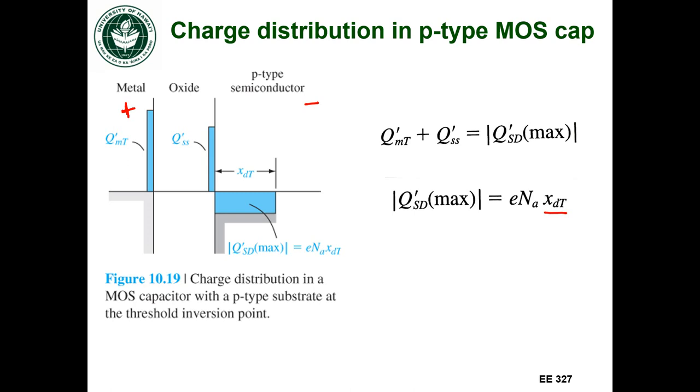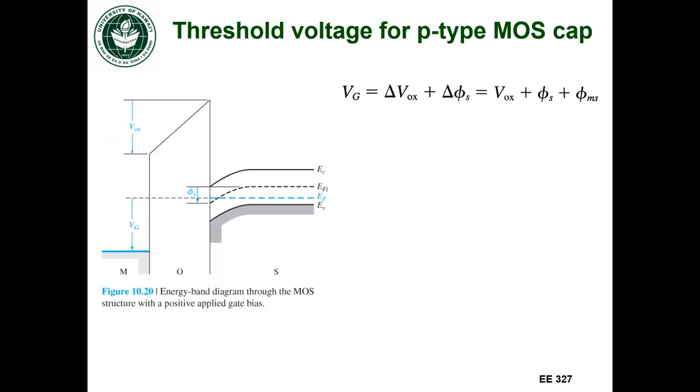Now let's take this and let's look at the energy band diagram. Same kind of bias, positive side on the metal, negative side semiconductor, and let's call this bias Vg.